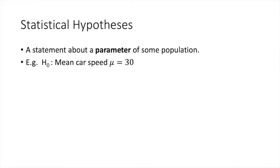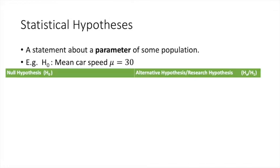A statistical hypothesis really is a statement about a parameter of a population. For example, the null hypothesis may state that the mean car speed equals 30. So let us compare the null and the alternative hypotheses in some detail now.